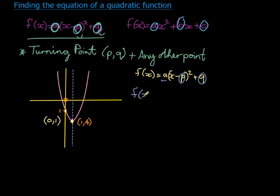So let's substitute what we do have. We don't have a yet, but we know that p is the symmetry axis, which is x equals 1, so x minus 1 squared. And q is, in this case, the minimum value, which is 4.